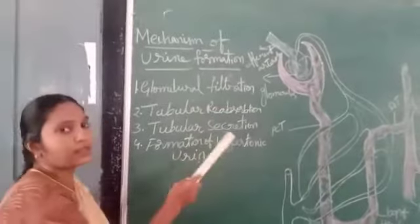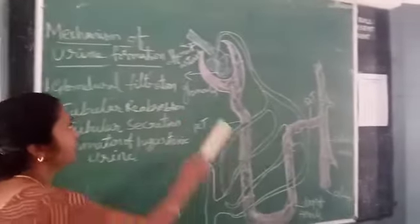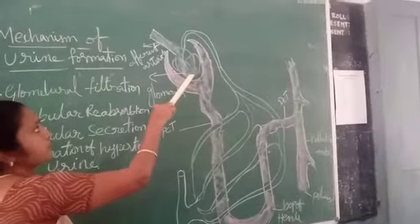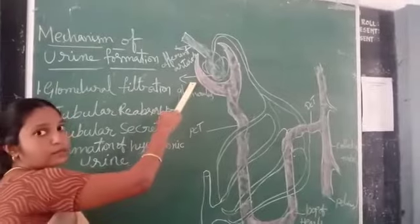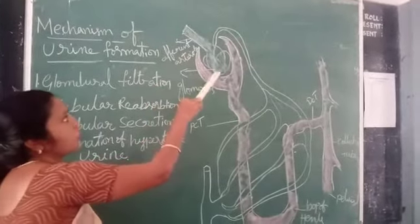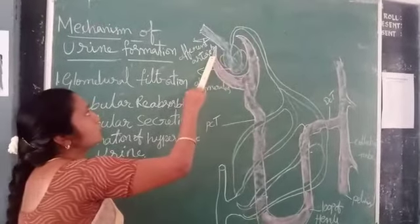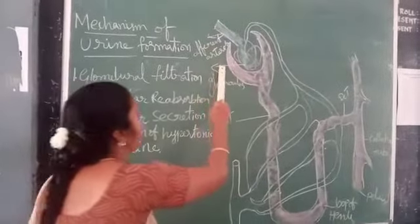Now I am going to discuss about glomerular filtration. Here this is the glomerulus. Bunch of structure is called glomerulus. Here blood flows from renal artery to glomerulus through efferent arteriole.